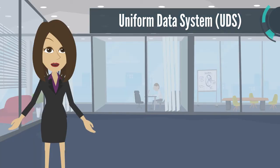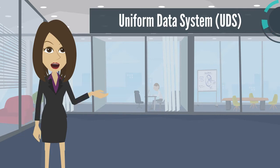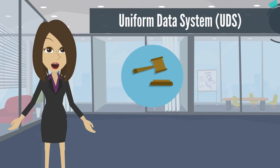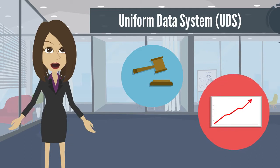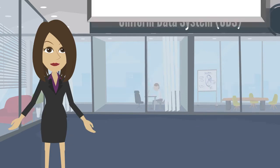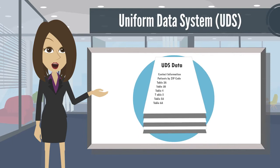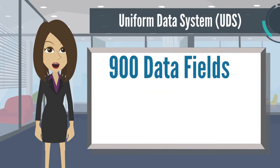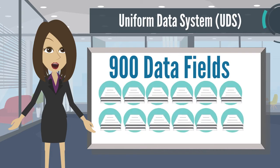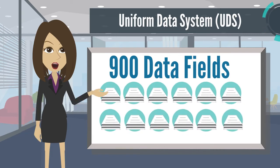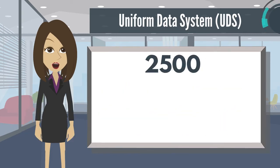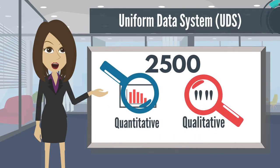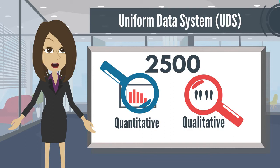UDS data is used to ensure compliance with Section 330 of the Public Health Service, PHS, Act legislative mandates and report program accomplishments. To give you an idea about how much data is collected, there are more than 900 data fields collected across 12 structured forms, with over 2,500 quantitative and qualitative validations and edit checks to ensure data quality.